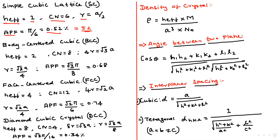For FCC (face-centered cubic), effective atoms = 4, coordination number = 12. The radius formula is 4R = √2·a. Atomic packing fraction for simple cubic is 0.52 (52%), for BCC is 0.68 (68%), and for FCC is 0.74 (74%).